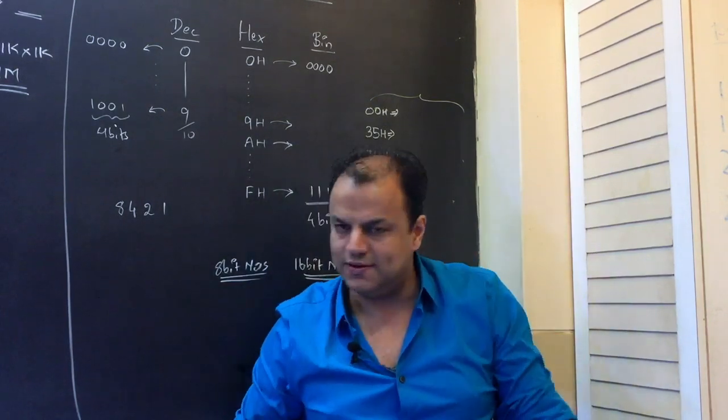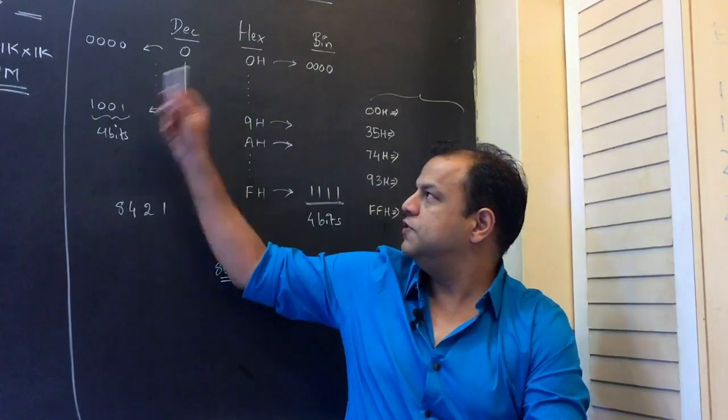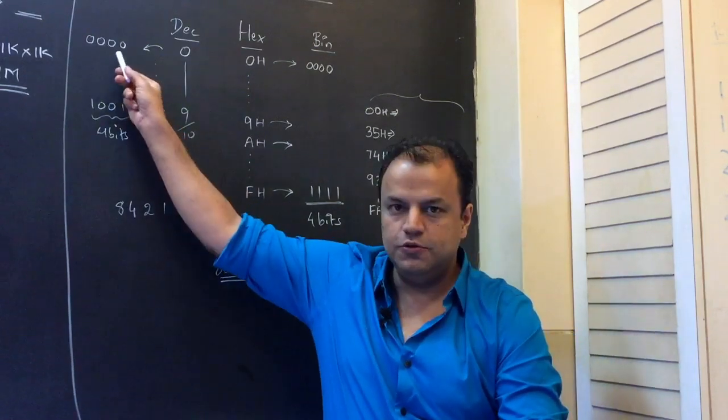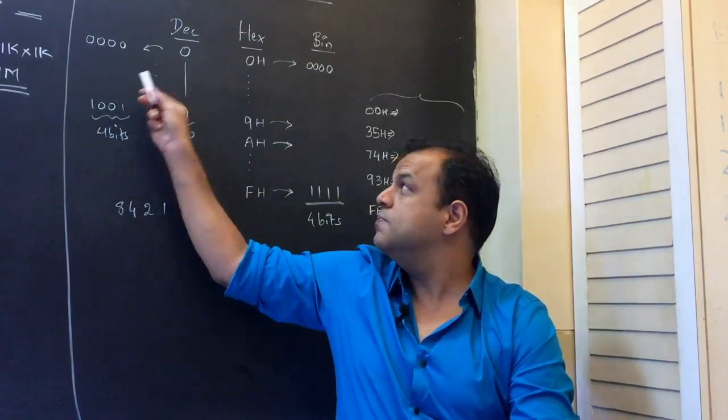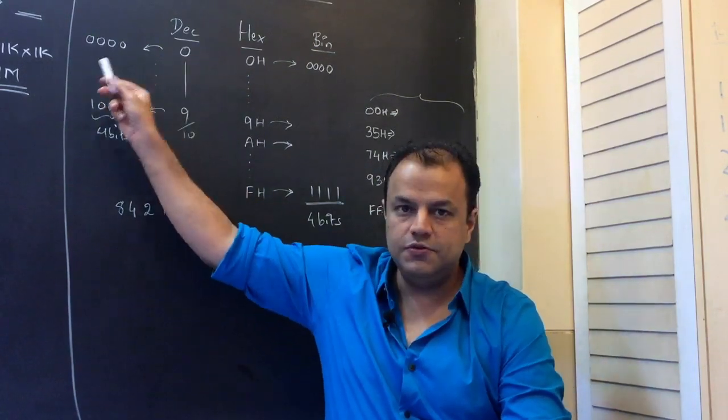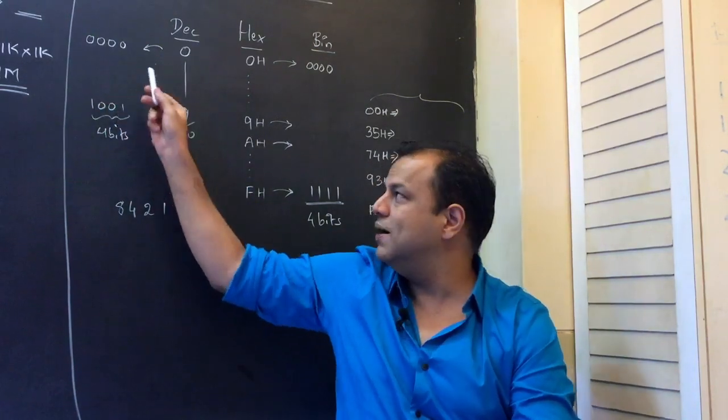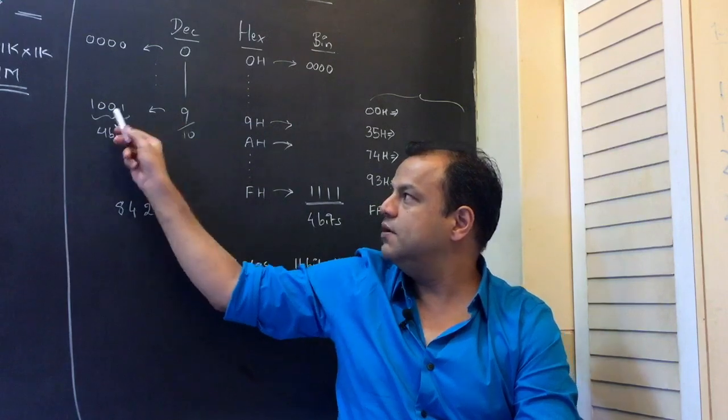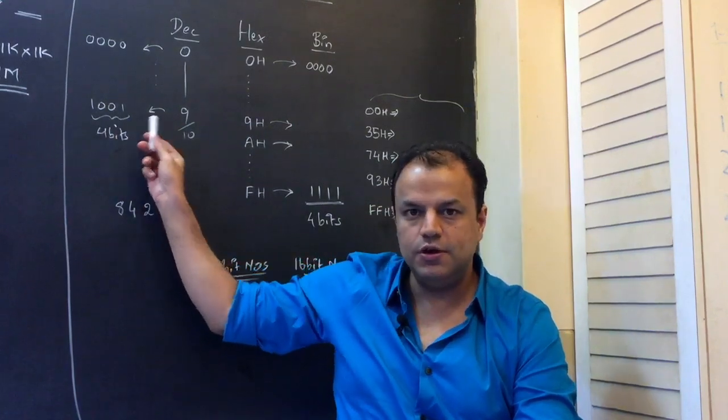Use four bits. So 0 will become 0000, 1 will be 0001, and 9 will be 1001.